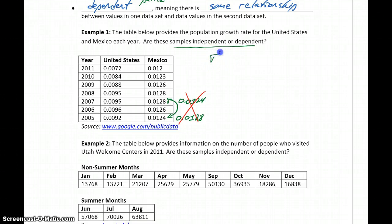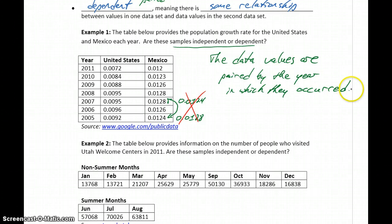We can't juggle those numbers around. In this case we would say the data values are paired, meaning they're dependent samples. They're paired by the year in which they occurred.